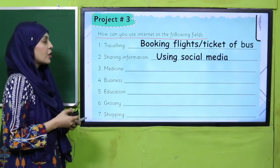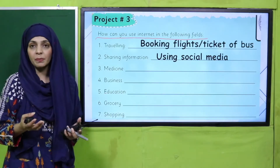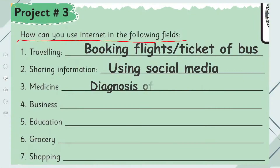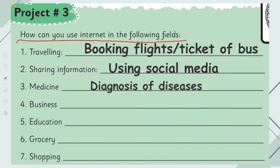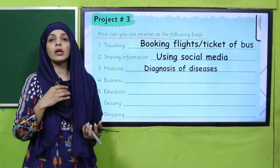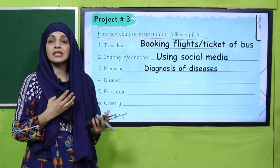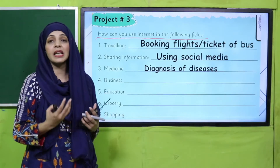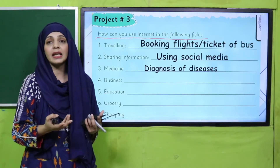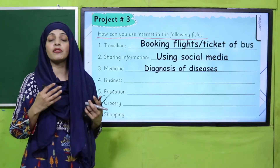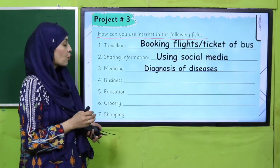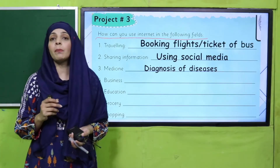Then, sharing information — you use social media. Besides that, in medicine, the internet is used for diagnosis of diseases. In business, how do you use it? Online transactions happen; you can purchase, you can sell — buying and selling of goods takes place through the internet.